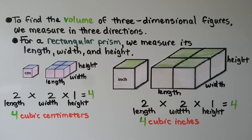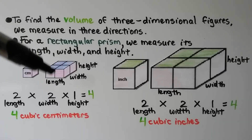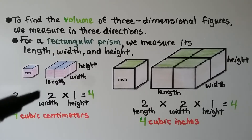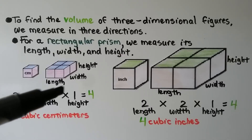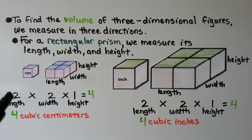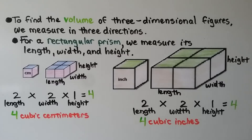To find the volume of three-dimensional figures, we measure in three directions. For a rectangular prism, we measure its length, width, and height. Here we have a 1-centimeter cube; with four of them, the length is 2 centimeters, the width is 2 centimeters, and the height is 1 centimeter. We multiply length times width times height: 2 times 2 is 4, times 1 is 4 — that's 4 cubic centimeters.